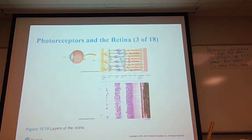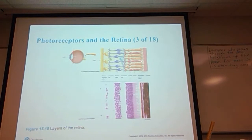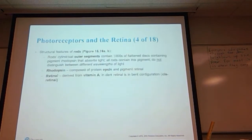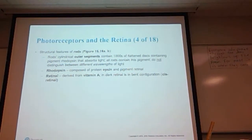Here are your rods and cones — the light comes in; the pinkish-colored ones are cones and the more orange-colored ones are rods. Rods are cylindrical and have outer segments that contain thousands of flattened discs containing the pigment rhodopsin, which absorbs light. All rods contain this pigment. They do not distinguish between different wavelengths of light.